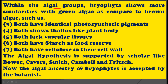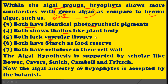Within algal groups, bryophytes show more similarity with green algae compared to brown algae. Both green algae and bryophytes have identical photosynthetic pigments, both show a thallus-like plant body, and both lack vascular tissues. This point is very important — algae and bryophytes both lack vascular tissues, whereas pteridophytes have vascular tissue.